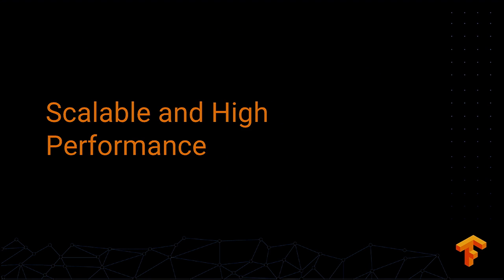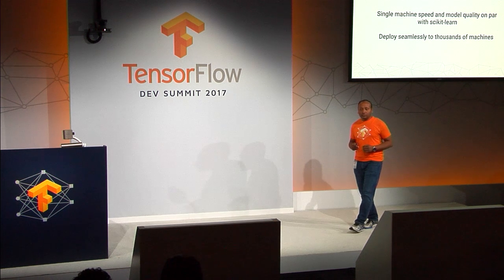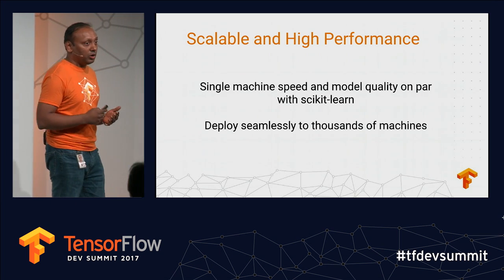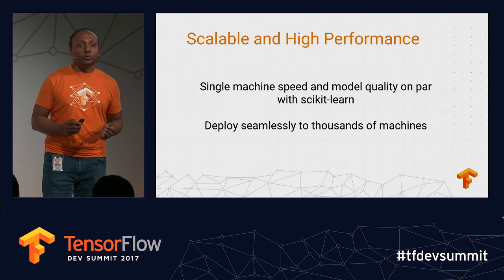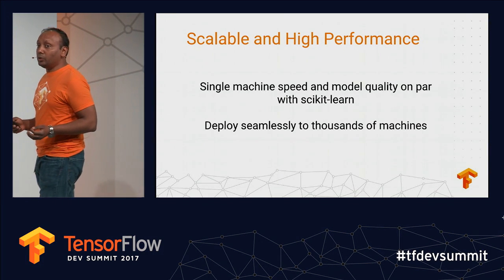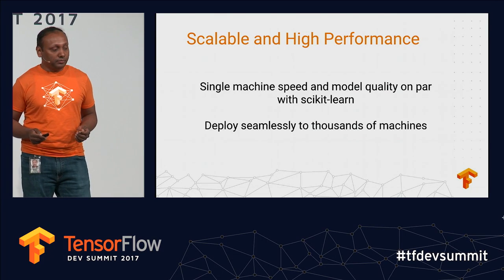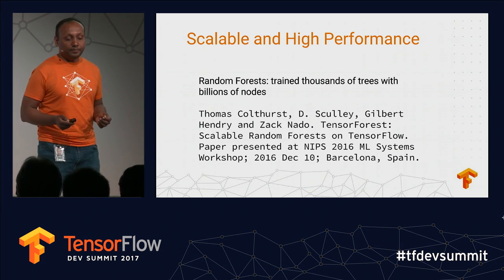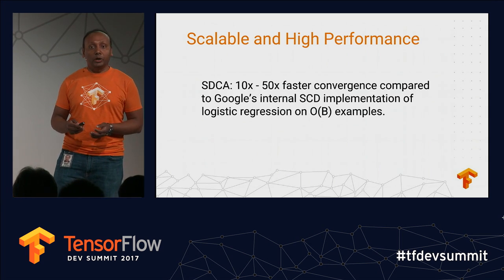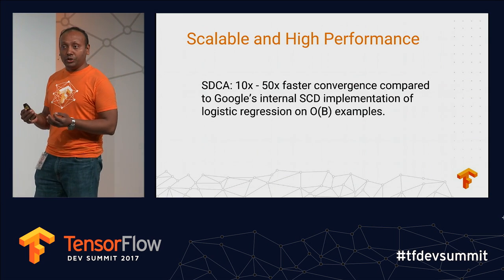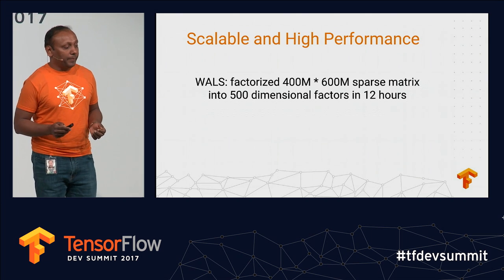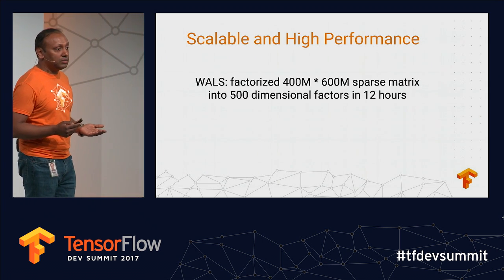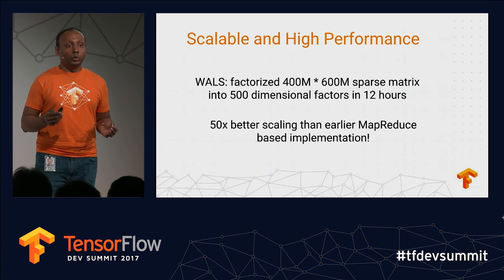Our implementations are really high performance. On a single machine, they are on par with scikit-learn in terms of model quality and speed, often faster for moderate-size problems. But where TensorFlow really shines is running seamlessly across hundreds of thousands of machines, enabling models much larger than seen in the literature. With random forests, we trained thousands of trees with billions of nodes — we have a paper at NIPS on that. With SDCA, we saw 10 to 50x faster convergence compared to Google's highly optimized internal coordinate descent implementations on logistic regression for datasets with billions of examples. With WALS, we factorized a matrix of 400 million rows by 600 million columns into factors with 500 columns in under 12 hours — 50x larger than what was possible with an earlier MapReduce-based implementation.